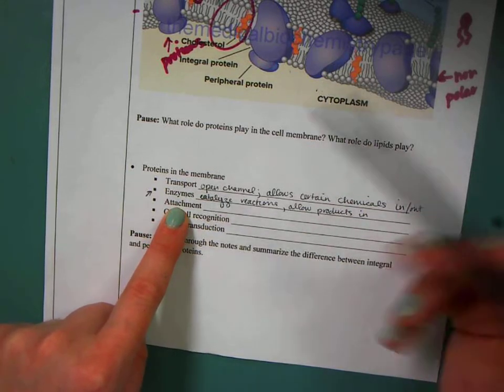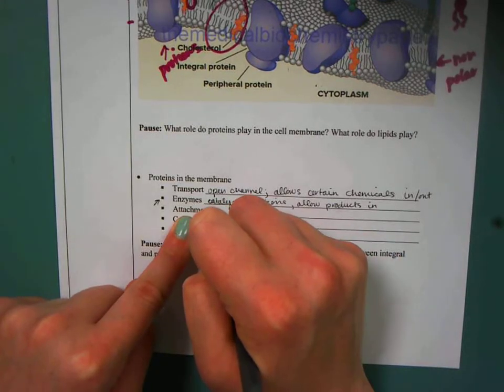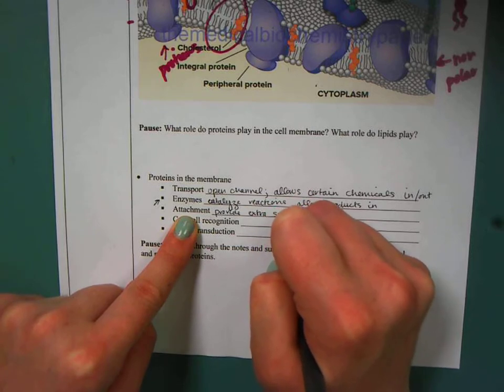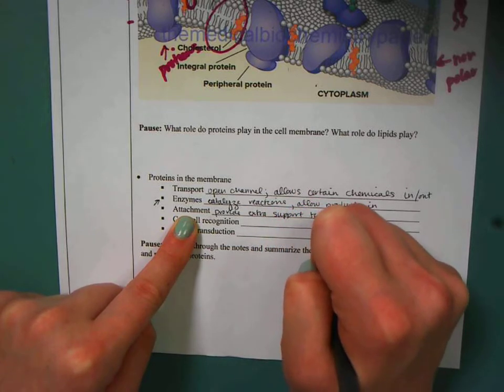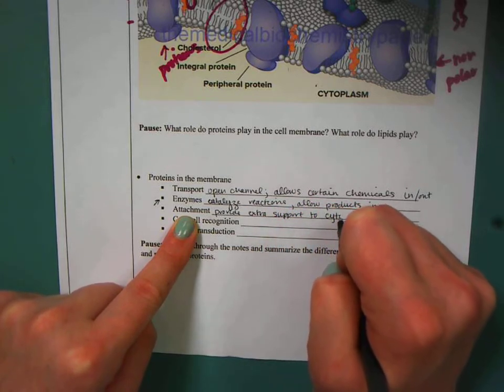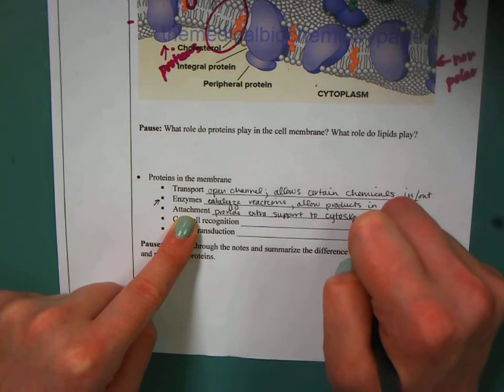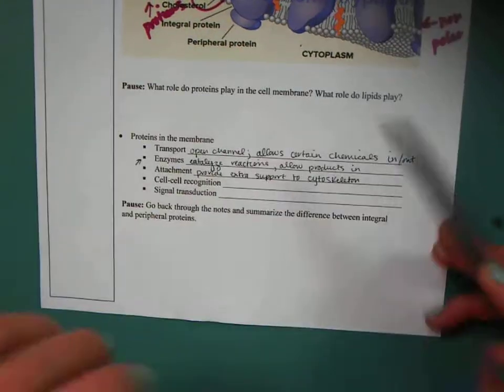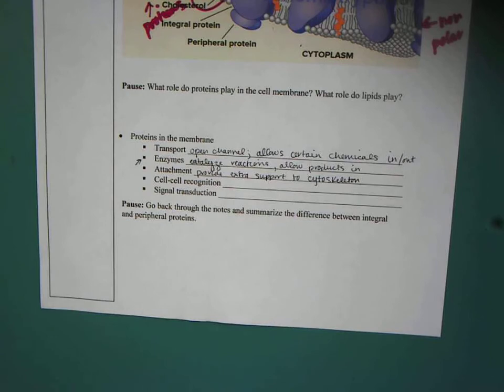We next have proteins that are used for attachment. So these provide extra support to the cytoplasm. So remember that the cytoskeleton is made of proteins. We have a couple of proteins on the outside that are used to support that cytoskeleton a little bit more.